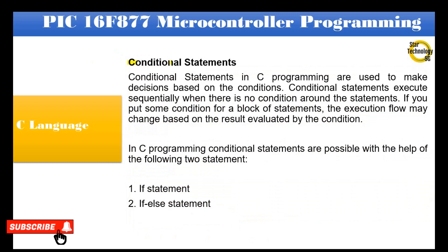Conditional statements in C programming are used to make decisions based on conditions. Conditional statements execute sequentially when there is no condition around the statements. If you put some condition for a block of statements, the execution flow may change based on the result evaluated by the condition. In C programming, conditional statements are possible with the help of two statements: the if statement and the if-else statement.